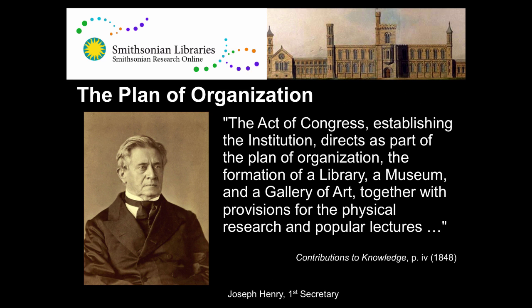An important part of the founding of the Smithsonian was the plan of organization for the institution. This is Joseph Henry on the screen, who is the first secretary or leader of the Smithsonian. Under his guidance, one of the key elements for the formation of the institution was that it would be comprised of a library, a museum, and a gallery of art, together with all of the different things associated with those. From the beginning, the Smithsonian was related to all of these different aspects.